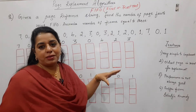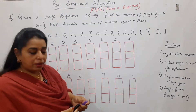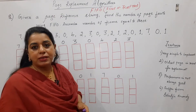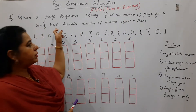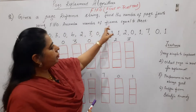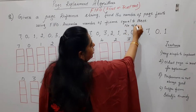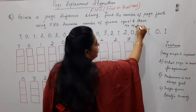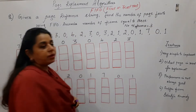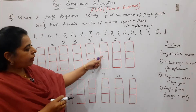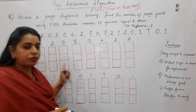Given is this reference string — find the number of page faults using First In, First Out, and assume number of frames equal to 3. So here we assume 3 frames as given in the problem statement. If it is 4 frames, you make 4 partitions; if it is 3, you make 3 partitions as shown here.